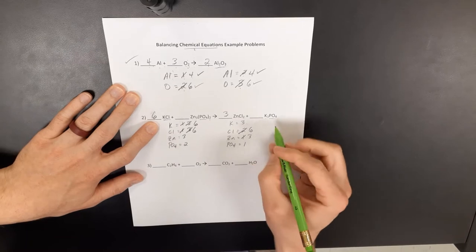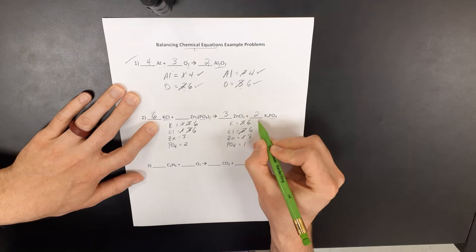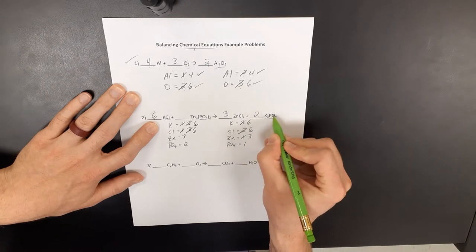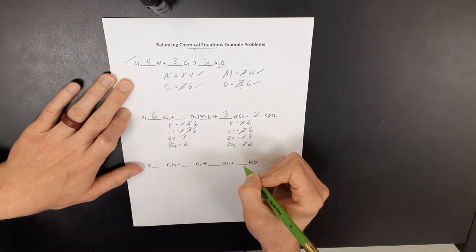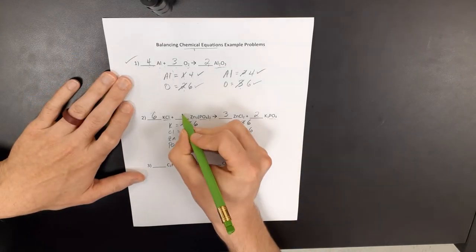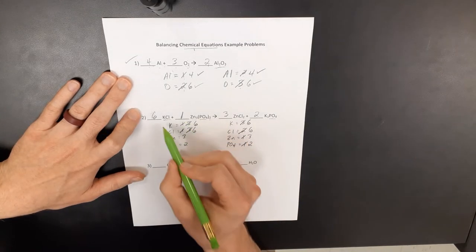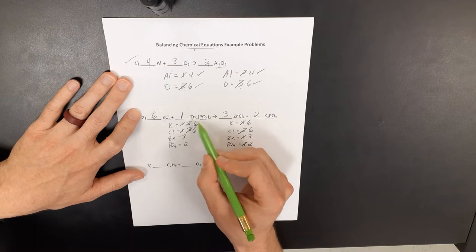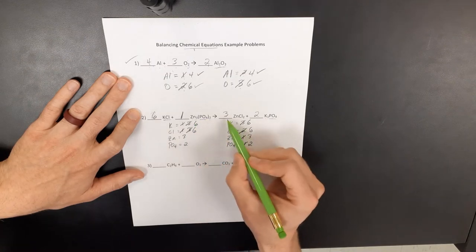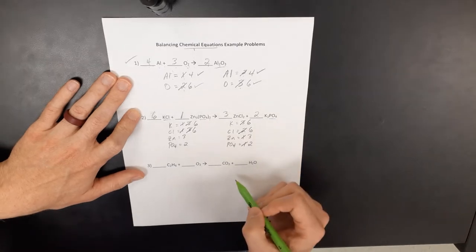I have six over here. I'm going to need six potassiums on this side. So I'm going to do two times three to give me six potassiums. That also now gives me two of these phosphate ions. So I'm going to put a one right here. If you don't, the one's understood. Okay, but now six potassium chlorides plus one zinc phosphate yields three zinc chlorides plus two potassium phosphates.